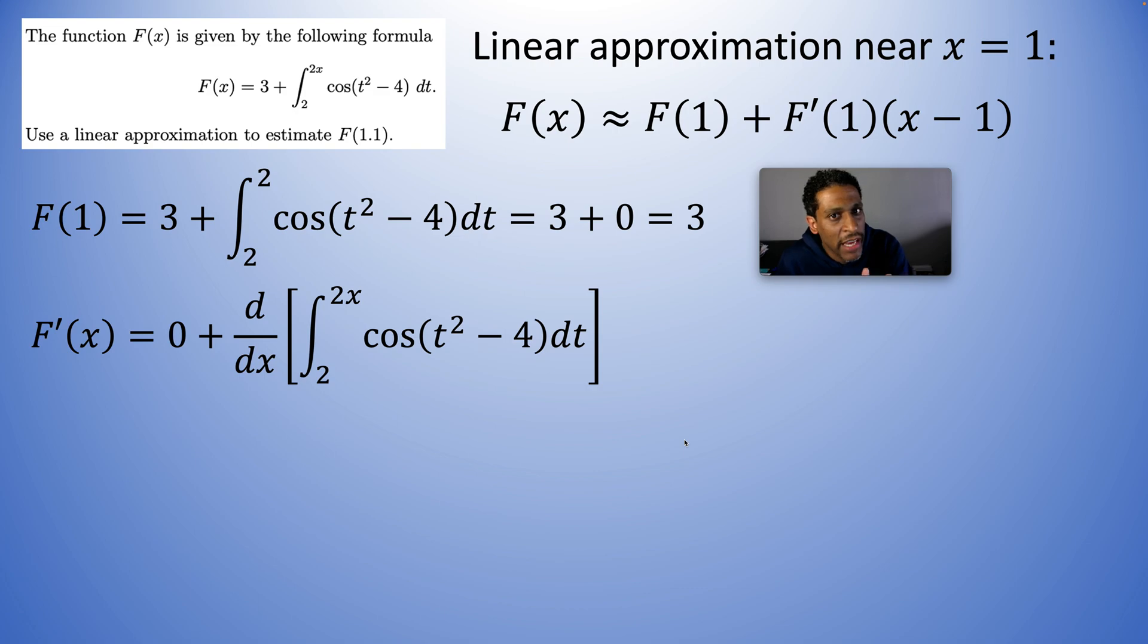But then chain rule says you can't stop there. You need to multiply by the derivative of the function in the upper limit. So we replace the t with 2x. It still needs to be squared. It still needs to take away 4. It still needs to be inside of a cosine.